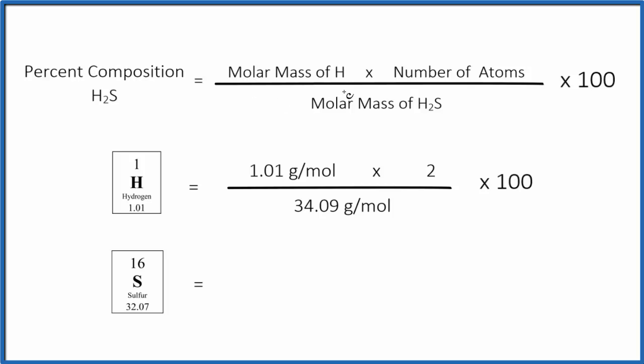What we do is we find the molar mass of hydrogen, the atomic mass, from the periodic table. That's 1.01 grams per mole. And we multiply that by the number of atoms. There are two hydrogen atoms in H2S, so we multiply that by 2.